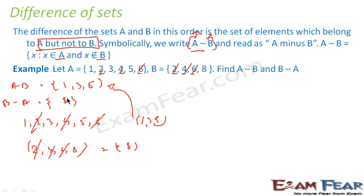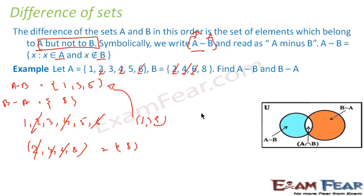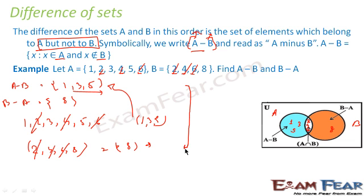This is how we find A minus B and B minus A. We can also do the same thing using a Venn diagram. In the Venn diagram, set A is one circle and set B is another. The blue region is A minus B and the red region is B minus A. The common element is 2, 4, 6, written in the intersection. The remaining elements in A are 1, 3, 5 and in B is 8. So A minus B is 1, 3, 5 and B minus A is 8 — the same answers as the normal approach.